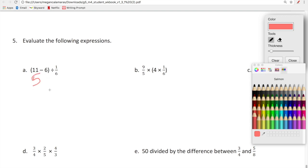And then five divided by one sixth is equal to five times six. Which is equal to 30. So we can say that this is equal to 30.